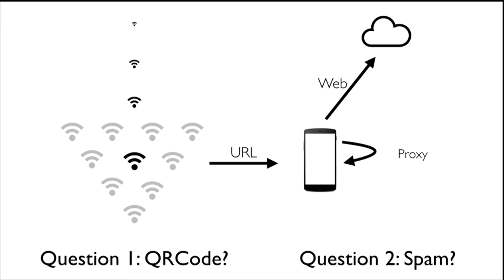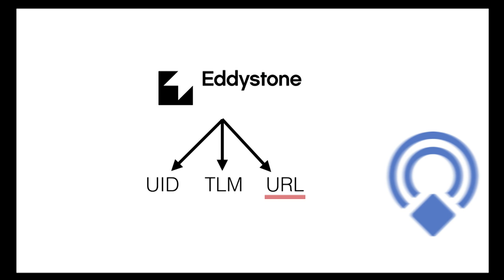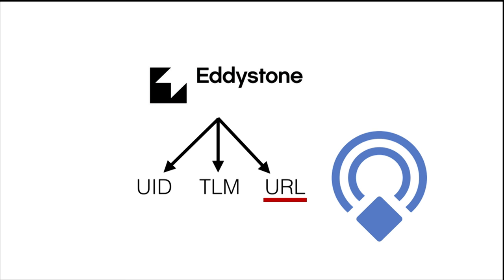We are built on top of Eddystone — the underlying beacon format you've probably heard 75 times in the last two days. There are three classic formats: the UID, the telemetry, and the URL. We're using the URL packet, and we just pack a URL inside with a simple compression scheme — for example, 'HTTPS colon slash slash www dot' is one byte. We are the scanner on top of Eddystone URL.